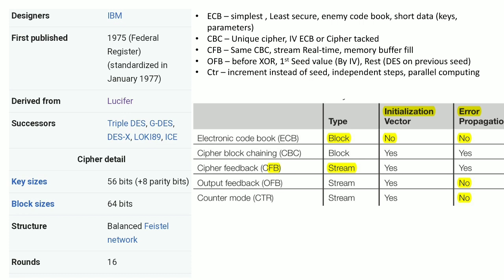The fifth mode is Counter Mode. Instead of using a seed value, it uses an incremental counter. Each encryption and decryption step is performed independently, making this mode suitable for parallel computing. Like OFB, errors do not propagate, but Counter Mode uses an incremental counter rather than a seed value derived from the previous step.